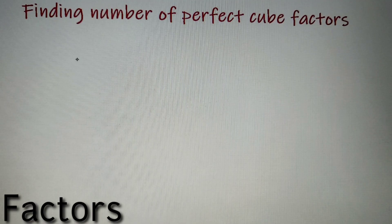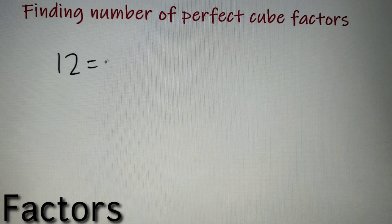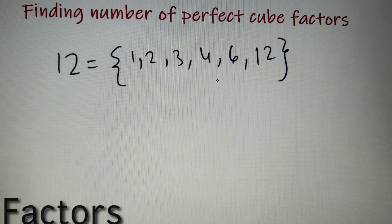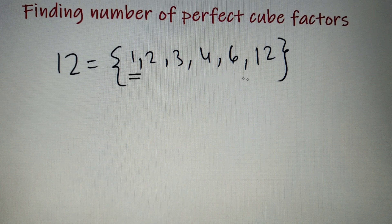Let's do a quick recap of what is a factor of a number. Factors of a number are the numbers which are less than or equal to that number and which divide the given number. For example, if I have the number 12, then all the factors are 1, 2, 3, 4, 6 and 12. All these 6 numbers are factors of 12 because all of them are less than or equal to it and divide 12. The factor of a number cannot be less than 1 and it cannot be greater than the number itself.